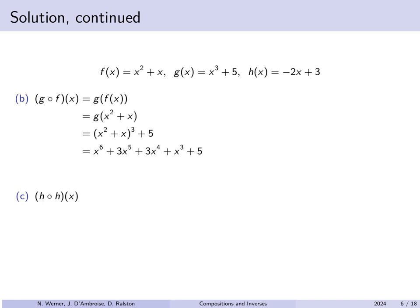For h(h(x)), we take h(x) and plug it into itself. h(x) is negative 2x plus 3, so h says multiply your input by negative 2 and add 3. Now the input is negative 2x plus 3 instead of just x. Multiply that by negative 2 and add 3, distribute, and collect like terms to get 4x minus 3.